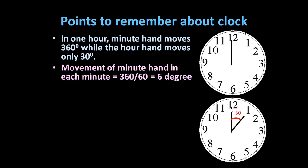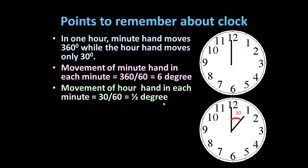And the hour hand in each minute will move 30 divided by 60, which is equal to half a degree. So in each minute, the hour hand moves only 0.5 degrees.